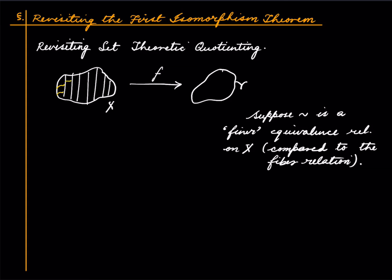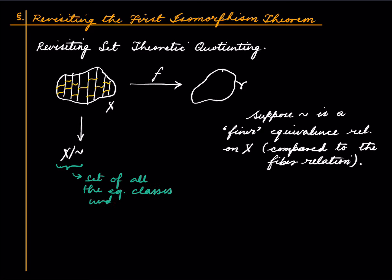The equivalence classes of tilde form partitions, and every fiber in turn gets partitioned into several parts, each part being an equivalence class under the tilde relation. So we get a map from X mod tilde — the set of all equivalence classes under tilde — to Y, which we will write as F bar.